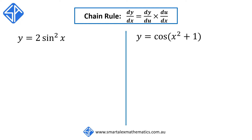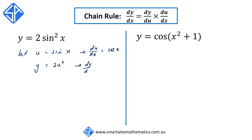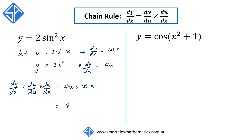For our next example, we're going to be differentiating trigonometric functions. We've got y is equal to 2 times sine squared x. We let u equal to sine x so that y can be written as 2 times u squared. From here, du/dx is equal to cos x, and dy/du is equal to 4u. Applying the chain rule, dy/dx equals 4u times cos x. Replacing u with sine x, this evaluates to 4 sine x cos x.